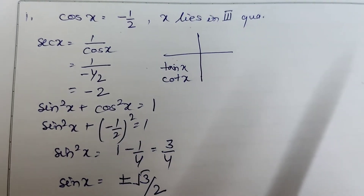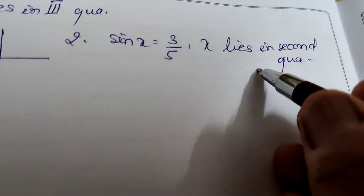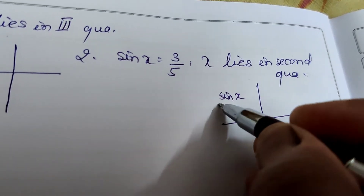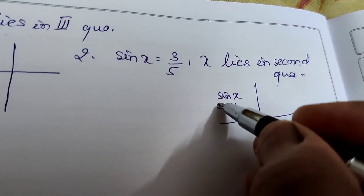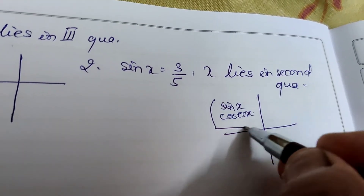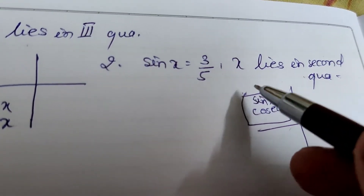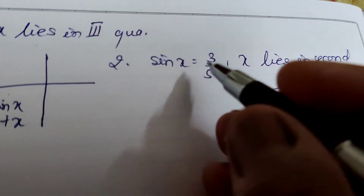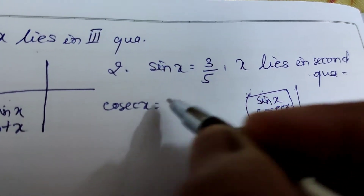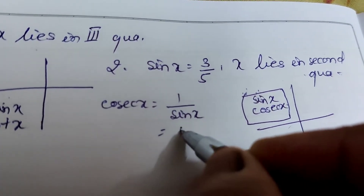Question 2: sin x = 3/5, x lies in the second quadrant. In the second quadrant, sin x and cosec x are positive, and all others are negative. So sin x = 3/5, therefore cosec x = 1/sin x = 5/3.